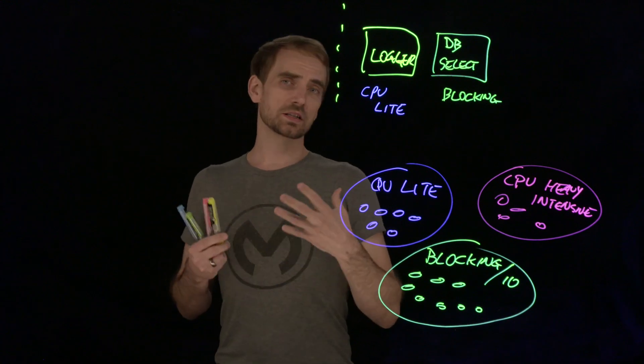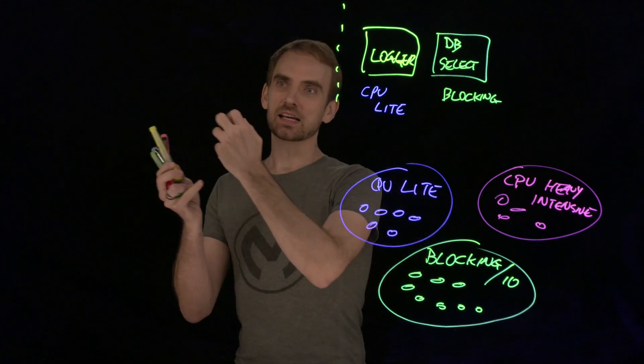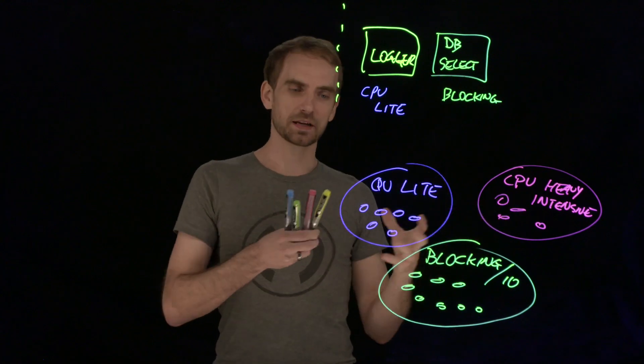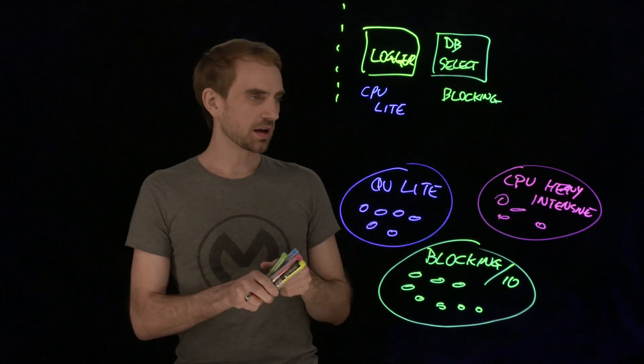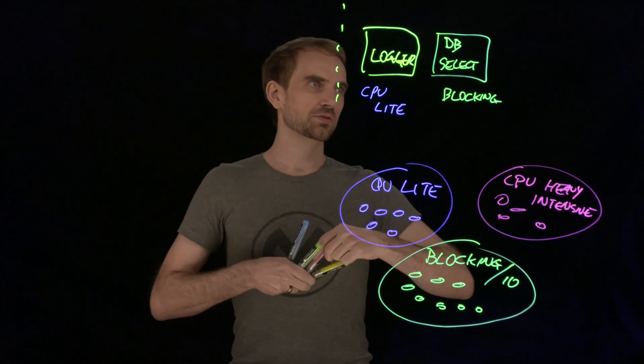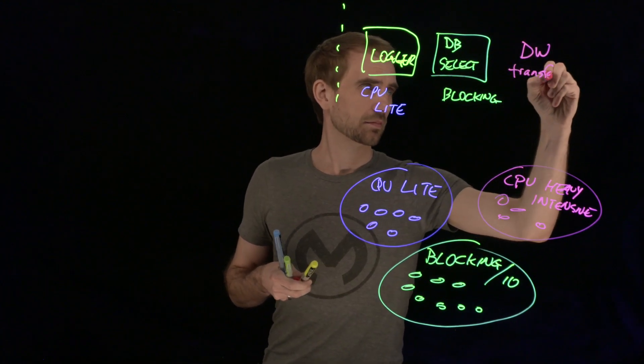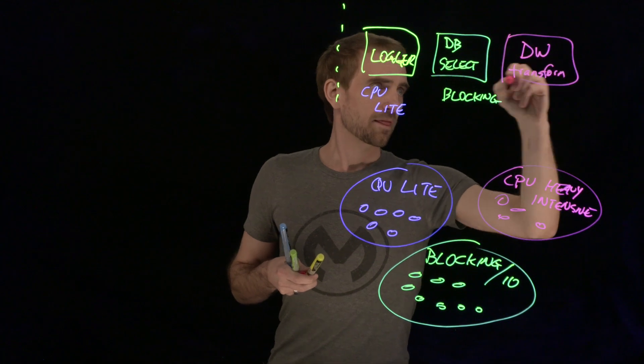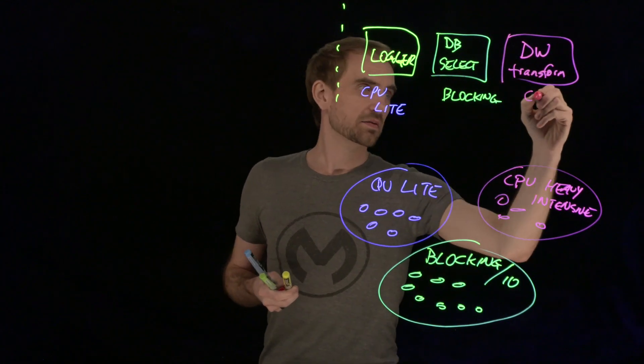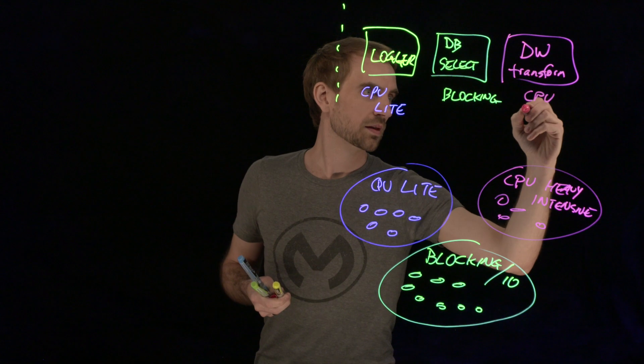Now, if we were doing something like a big map of an array to another with some complex mapping rules, something like the data weave transform message, that could potentially be CPU intensive.